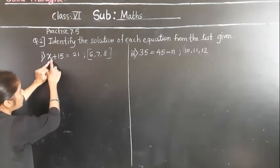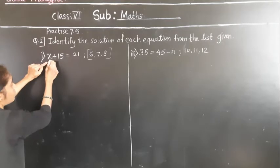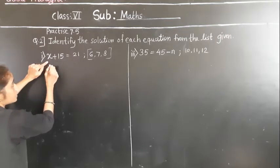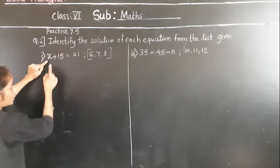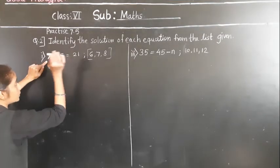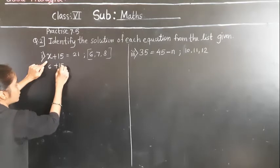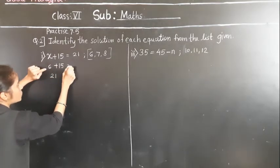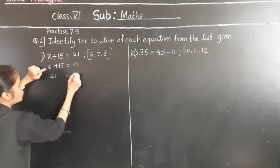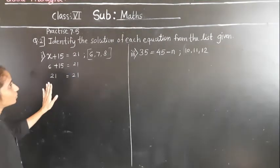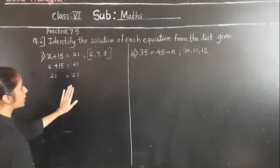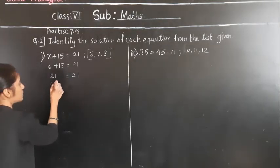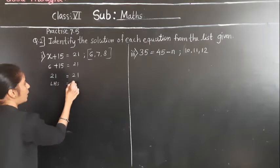Let's try 6. If we put x equal to 6, then in the place of x we put 6: 6 plus 15 gives us 21. So we got left hand side is equal to right hand side. LHS is equal to RHS.